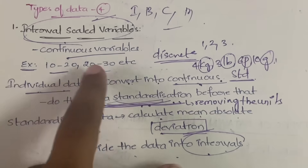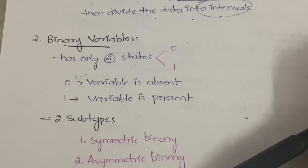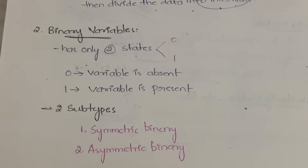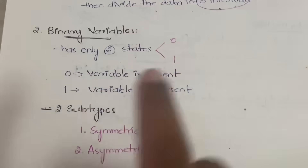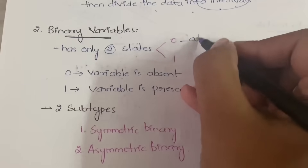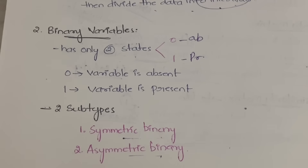The next category is binary variables. Binary means the variable has only two states: either 1 or 0. Zero means the variable is absent, and one means the variable is present. Binary variables have two subtypes: symmetric binary variables and asymmetric binary variables.